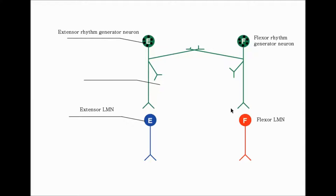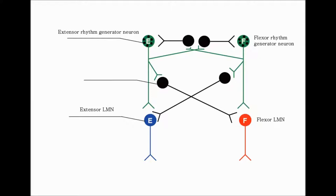There is no regular pattern because these are not coupled. So in order to add that function, we need to put in interneurons that act in an inhibitory way. The next step is to add inhibitory interneurons. As you can see, there are four inhibitory interneurons.